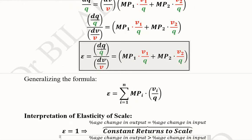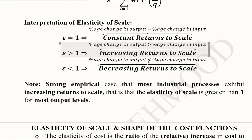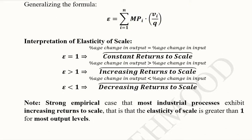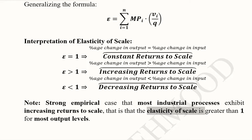Keeping in mind the formula for elasticity of scale, we can do the interpretation and calculate this value using the formula, which is easier to work with. The empirical evidence found for most industrial processes shows increasing returns to scale. This can evolve over time, but generally the elasticity of scale is greater than 1 for most output levels.